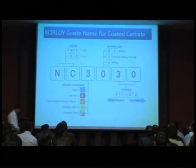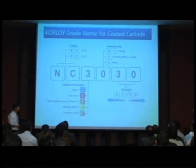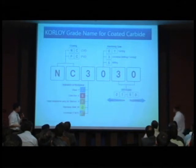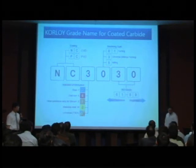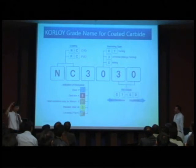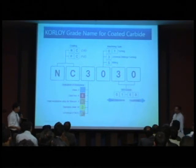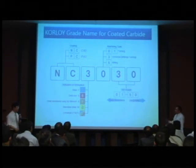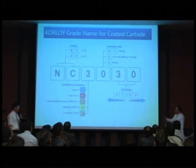The first two letters of the alphabet indicate whether it is CVD (chemical vapor deposition) or PVD (physical vapor deposition) coating. But most important are the last two digits. For example, if the number is 01, it means it is a very hard grade, while 50 is very tough — the first is like glass and the last is like plastic wood.